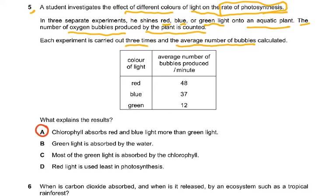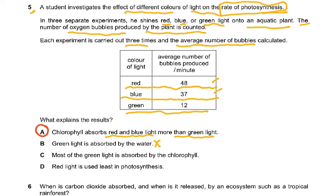Red light gave 48 bubbles per minute, blue gave 37, and green gave 12. What explains the result? Chlorophyll absorbs red and blue light more than green light — that's correct. Green light is reflected back, which is why we see green. The answer 'most green light is absorbed by chlorophyll' is wrong, and 'red light is used least in photosynthesis' is contradicted by the highest bubble count for red.